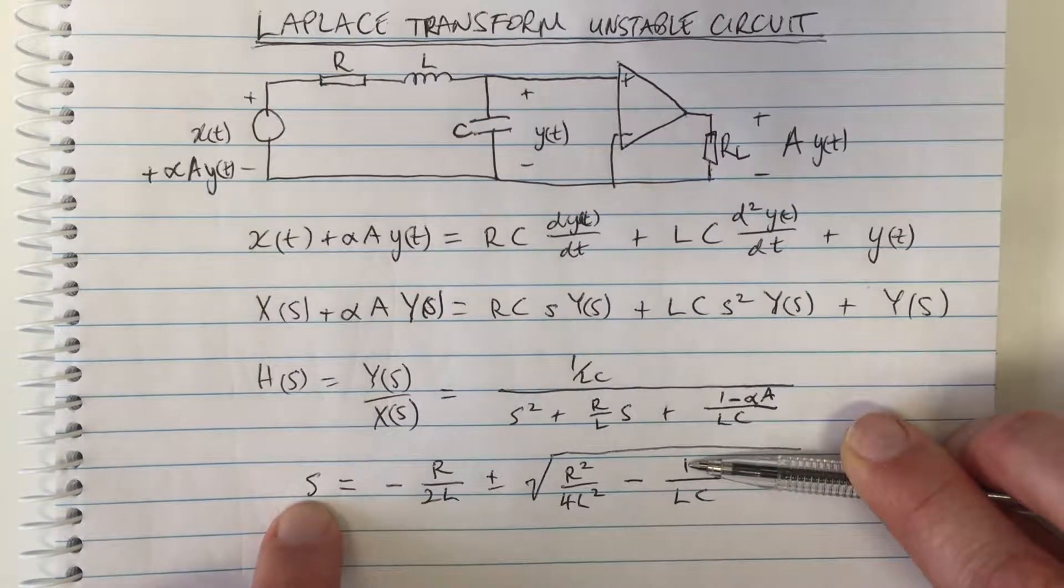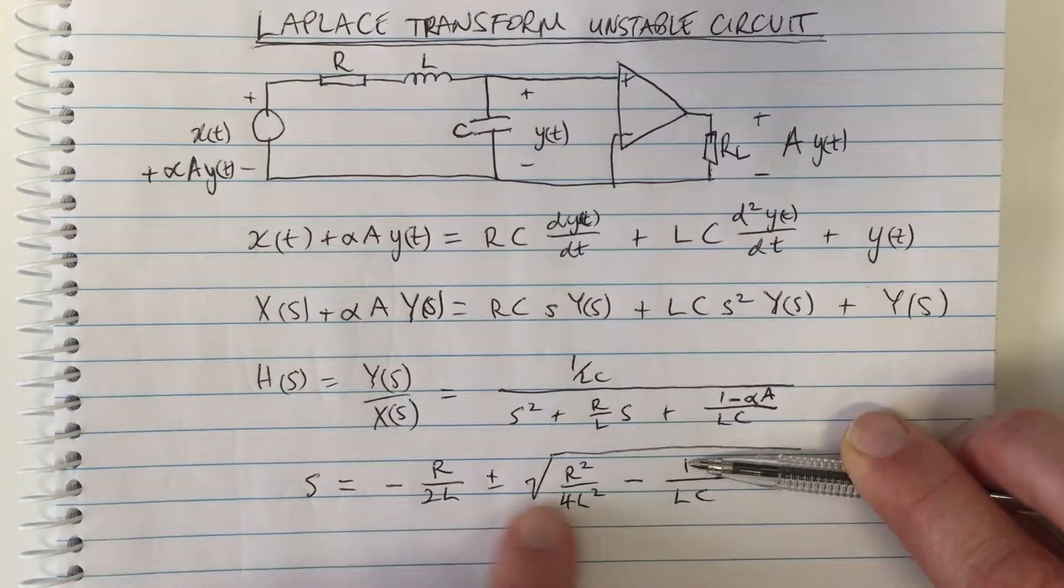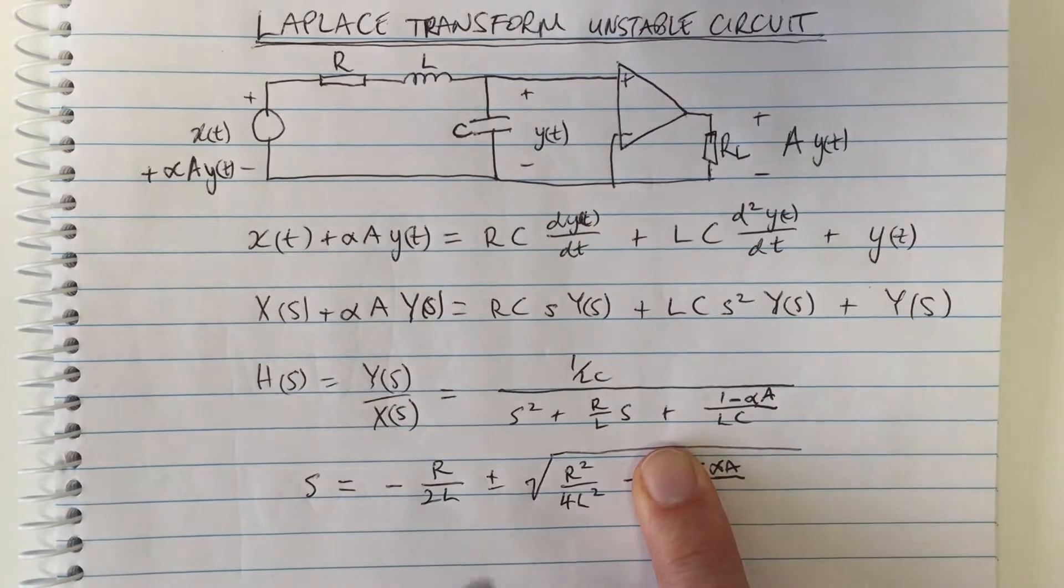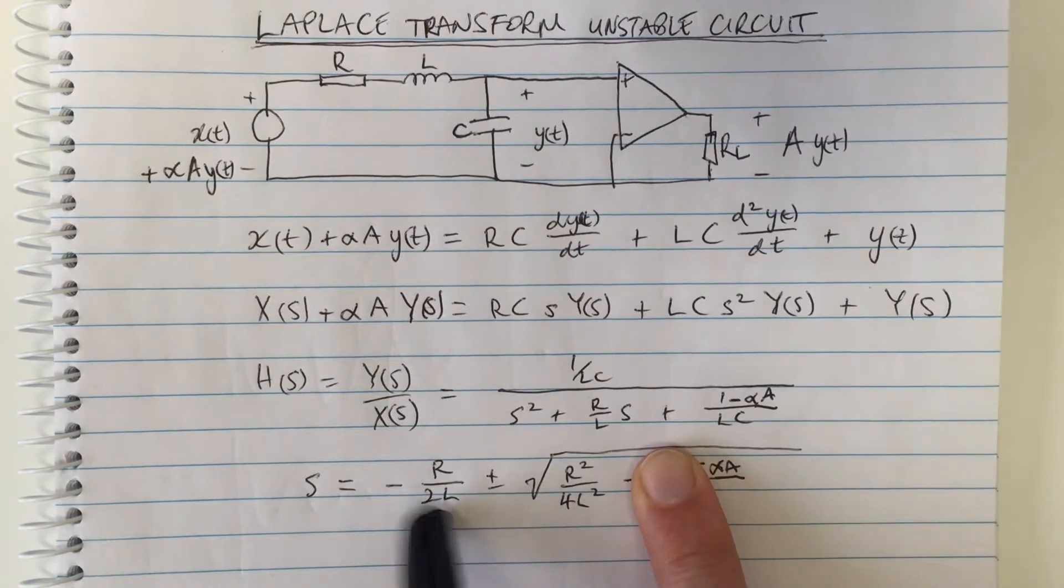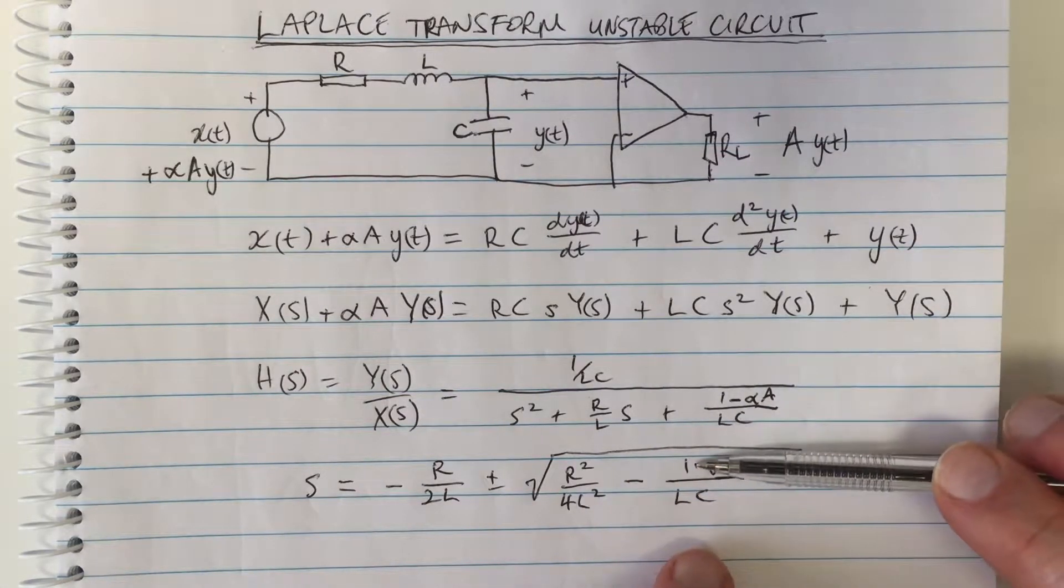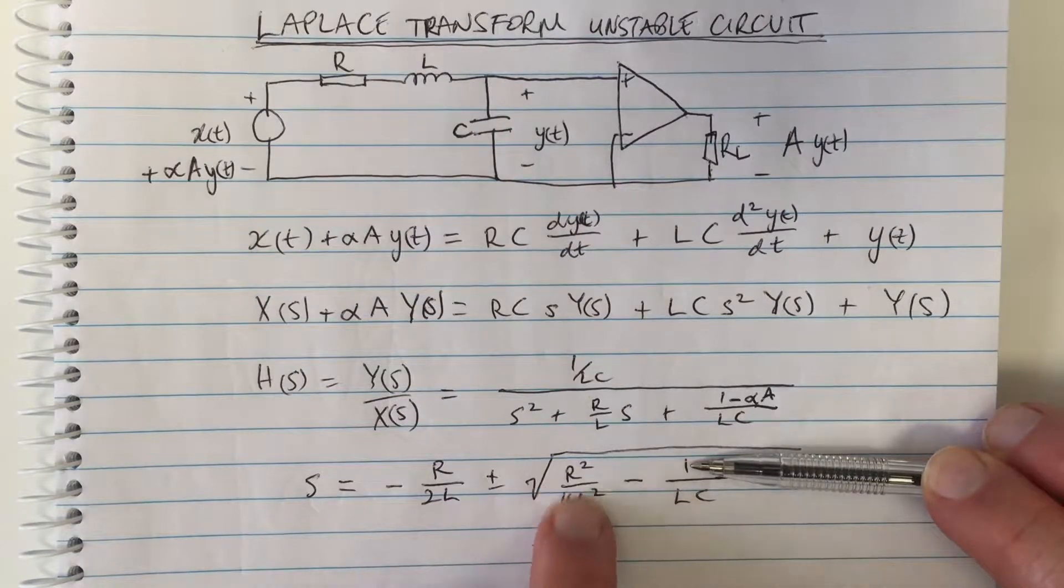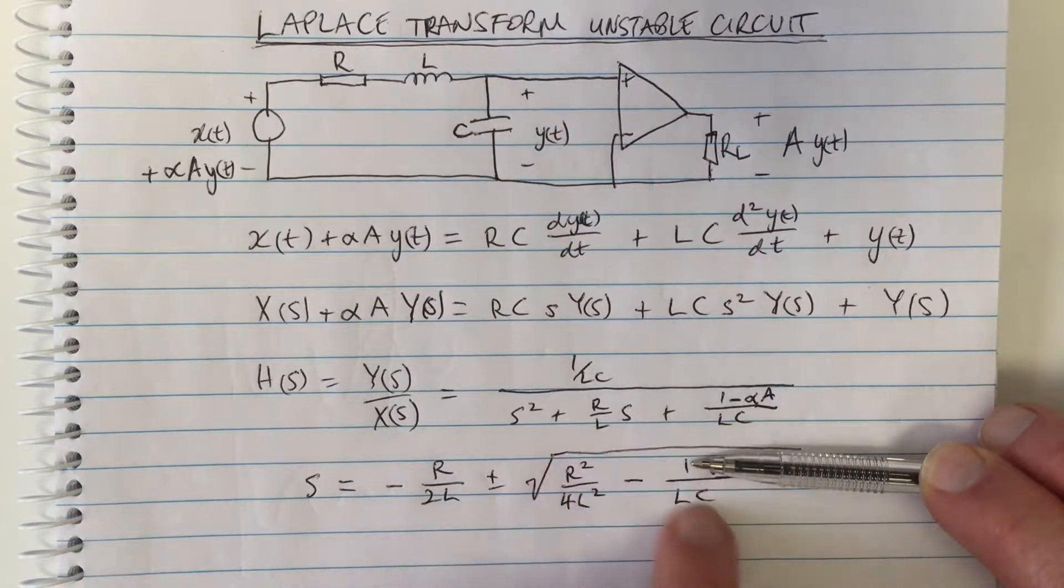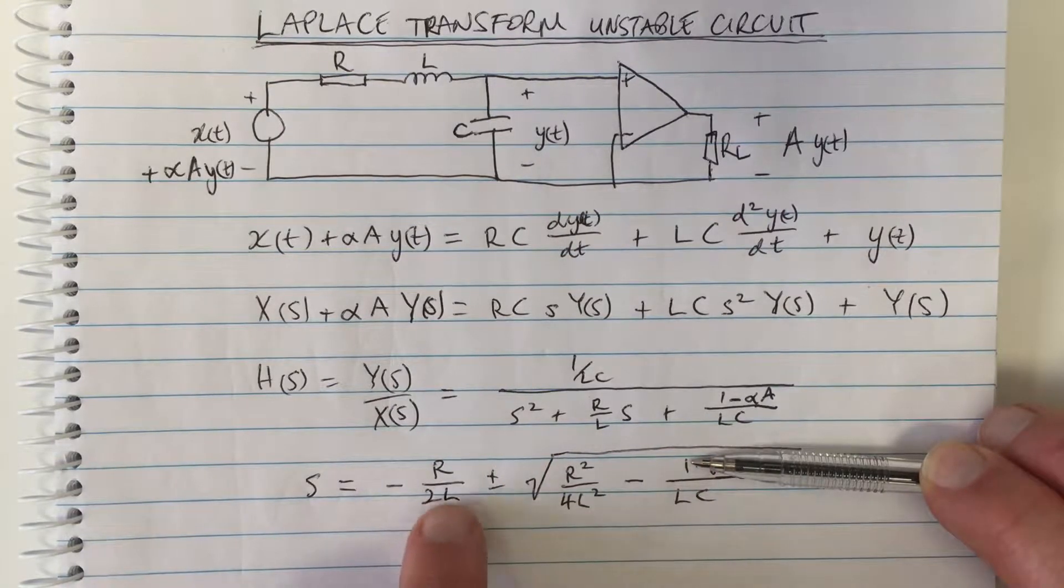This expression here had poles at this negative value plus or minus this value here. This is just the square of that, so with the square root, if this wasn't there then one of the poles would be at zero because this squared then square rooted is this, and minus plus would give us zero. Without the alpha A, with the actual circuit we had, we had this R squared on 4L squared minus a positive number.